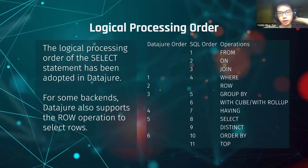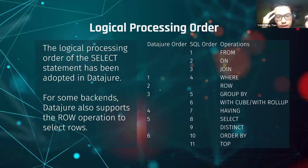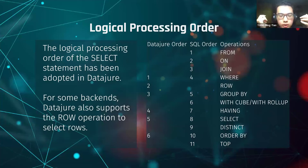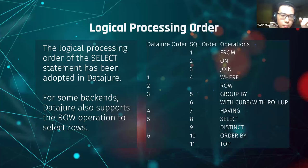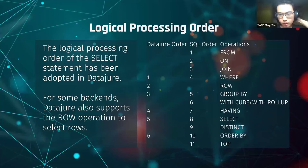The logical processing order of DataJure is similar to the SELECT statement of SQL, but with one extra operation: the row operation, which selects rows from the dataset according to index. This is not supported for all backends — it is supported in Tablecloth and tech.ml.dataset.